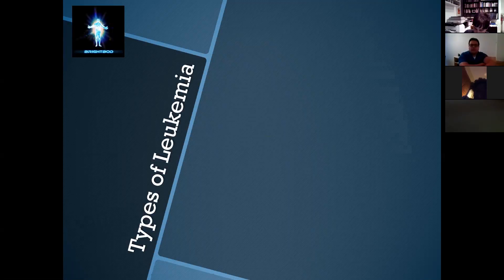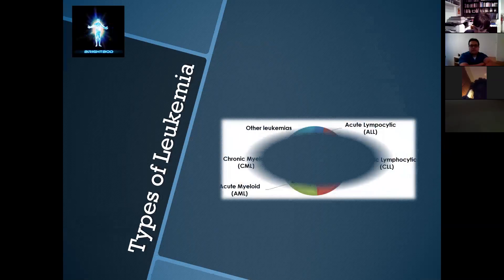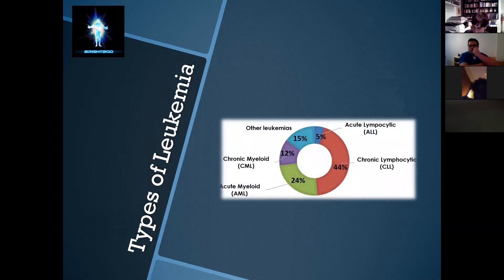So let's see the types of leukemia. It depends on the line of cells that is compromised. We have both types of leukemia: the lymphocytic and the myeloid leukemia. Lymphocytic means that the white blood cells are damaged, and myeloid leukemia means that red blood cells mainly are damaged. Here we can see the percentage of the types of leukemia.